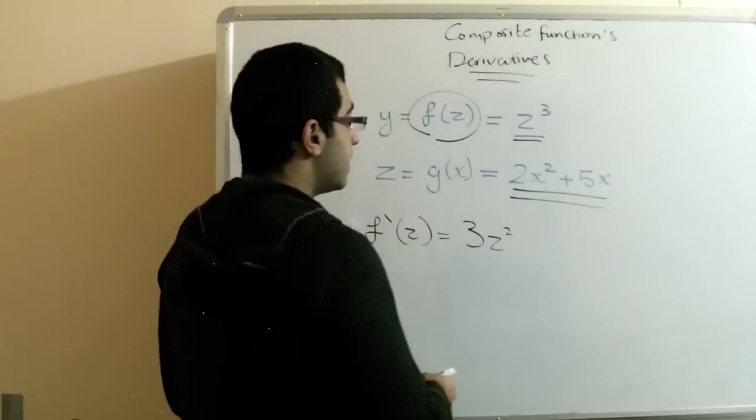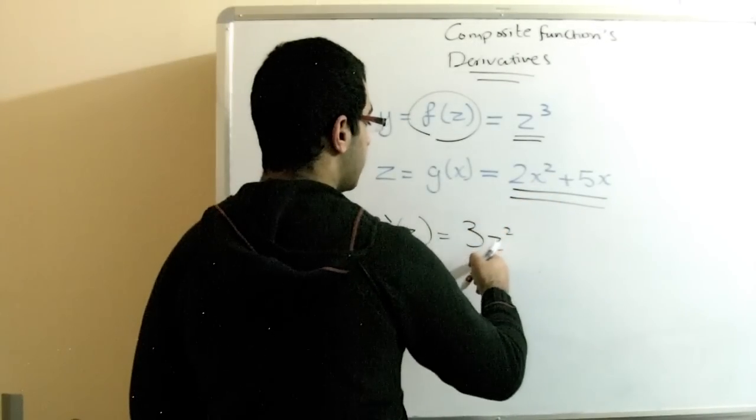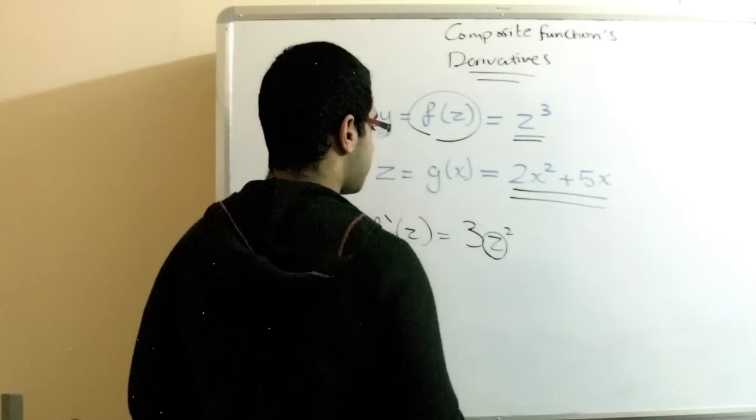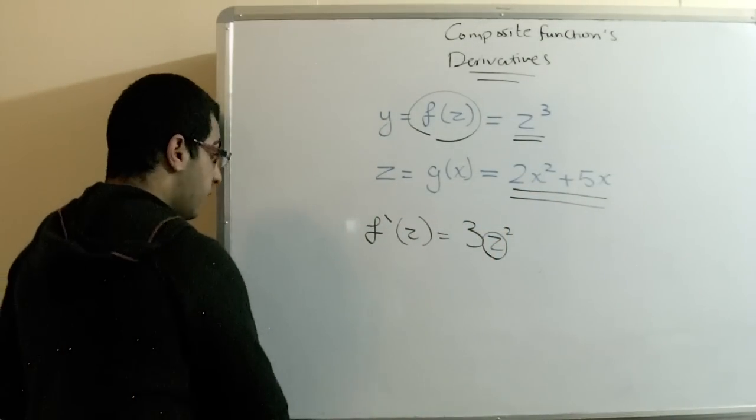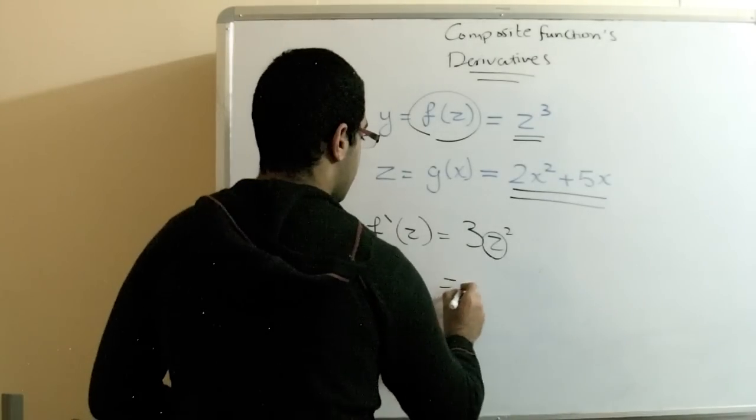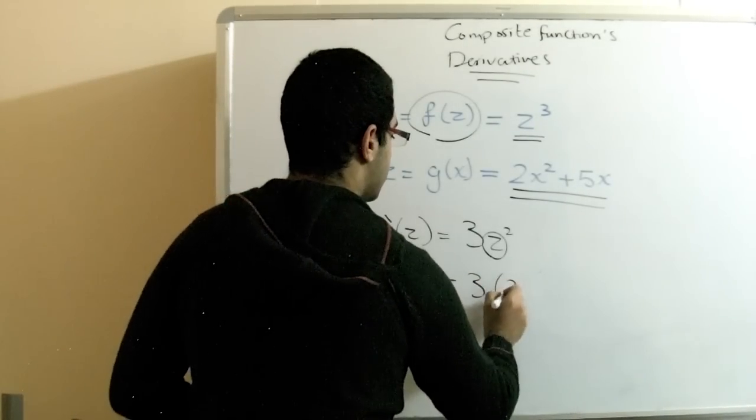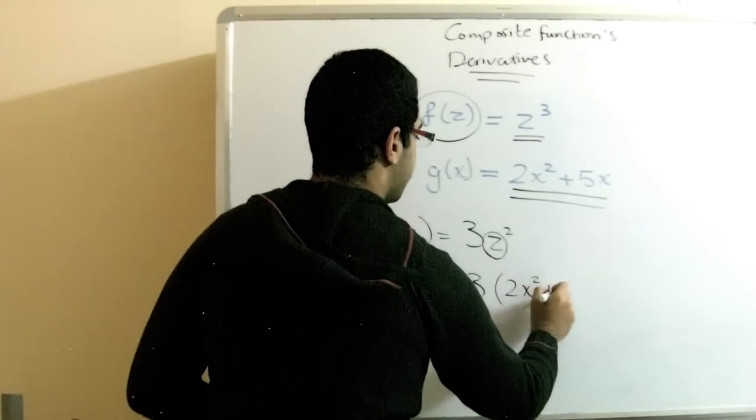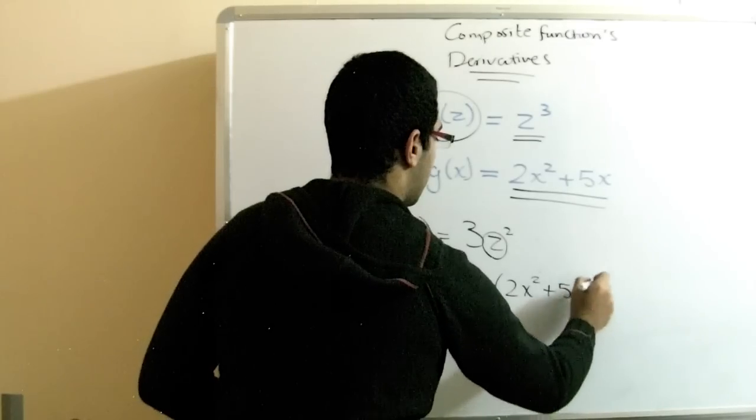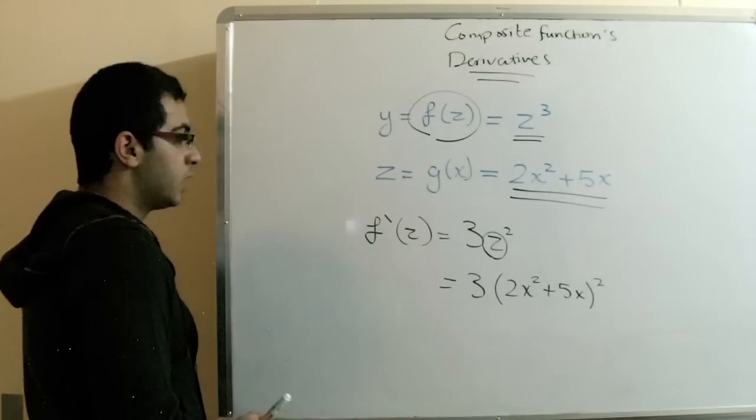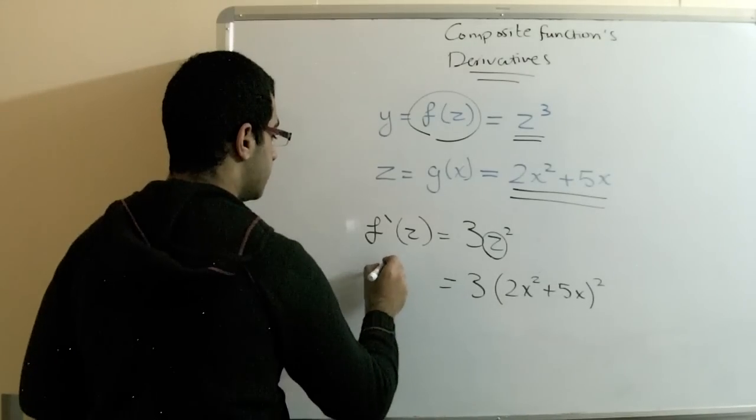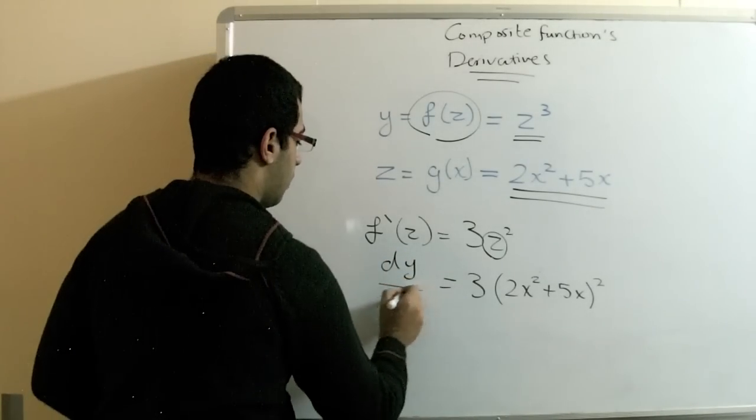What we'll do is substitute with this value directly. So the derivative becomes 3(2x to power 2 plus 5x) all of power 2. This is our dy over dz.